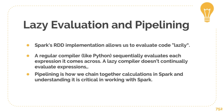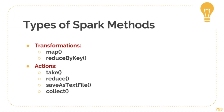RDDs allow us to evaluate code lazily. Lazy evaluation means it postpones running a calculation until it's needed. A regular compiler like Python goes through line by line every expression it comes across. However, a lazy compiler doesn't do that — instead it groups everything together but doesn't actually perform anything until it's asked to. So it just stores these instructions or expressions in a chain or pipeline, and they're only executed when needed. There are some main methods in Spark: transformation methods include map and reduceByKey, and actions include take, reduce, save as text file, and collect, among others.